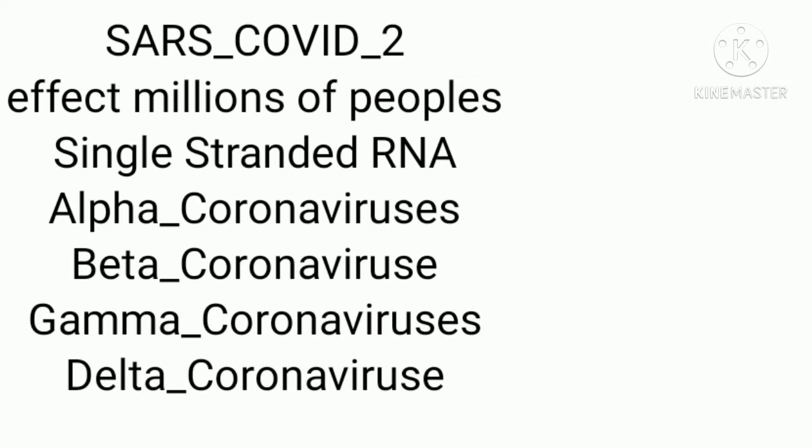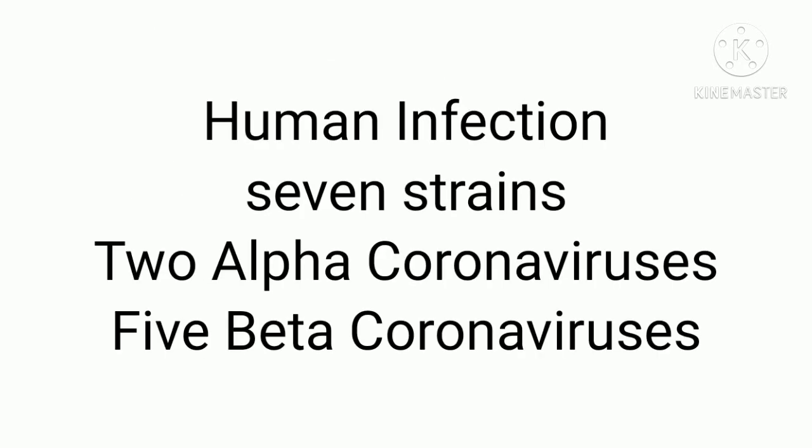SARS-CoV-2 is a type of single-stranded RNA virus that belongs to the coronavirus family. The coronavirus can be divided into four genera: alpha-coronaviruses, beta-coronaviruses, gamma-coronaviruses, and delta-coronaviruses. Currently, there are seven coronaviruses known to infect humans, which includes two alpha-coronaviruses and five beta-coronaviruses.